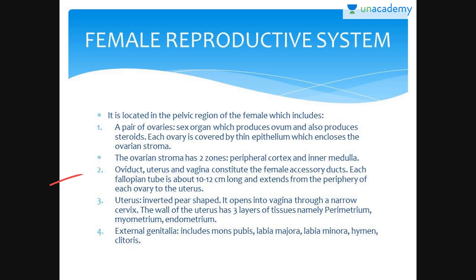Oviducts, uterus, and vagina constitute the female accessory ducts. Each fallopian tube is about 10 to 12 cm long and extends from the periphery of each ovary to the uterus. Close to the ovary, the oviduct has a funnel-shaped structure called infundibulum.